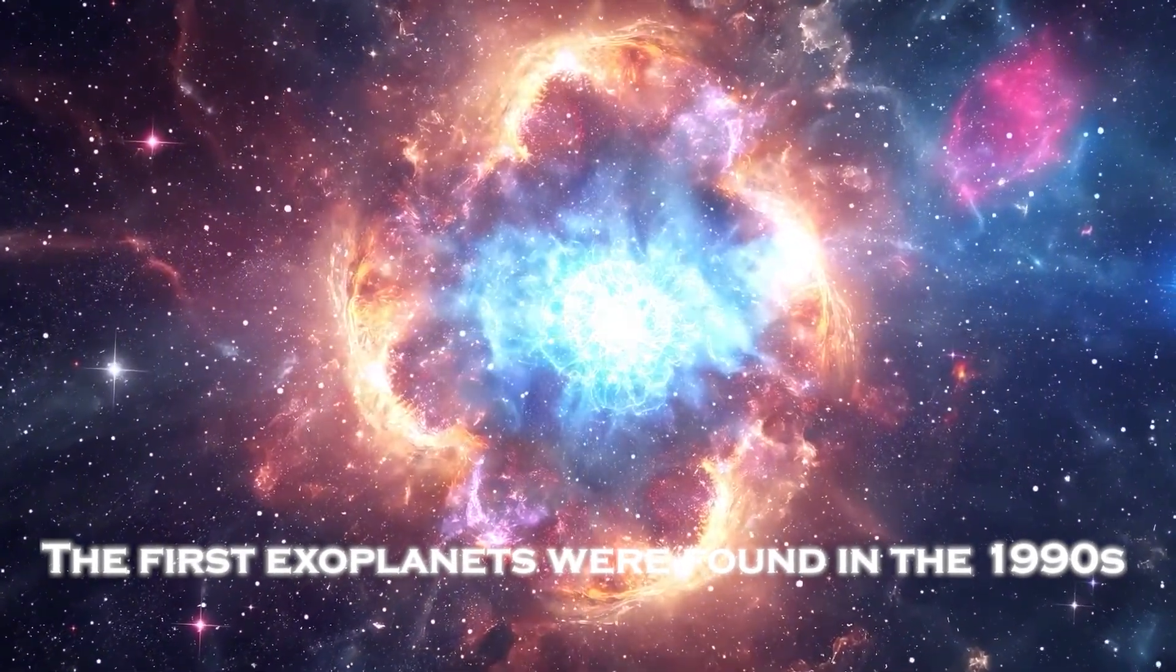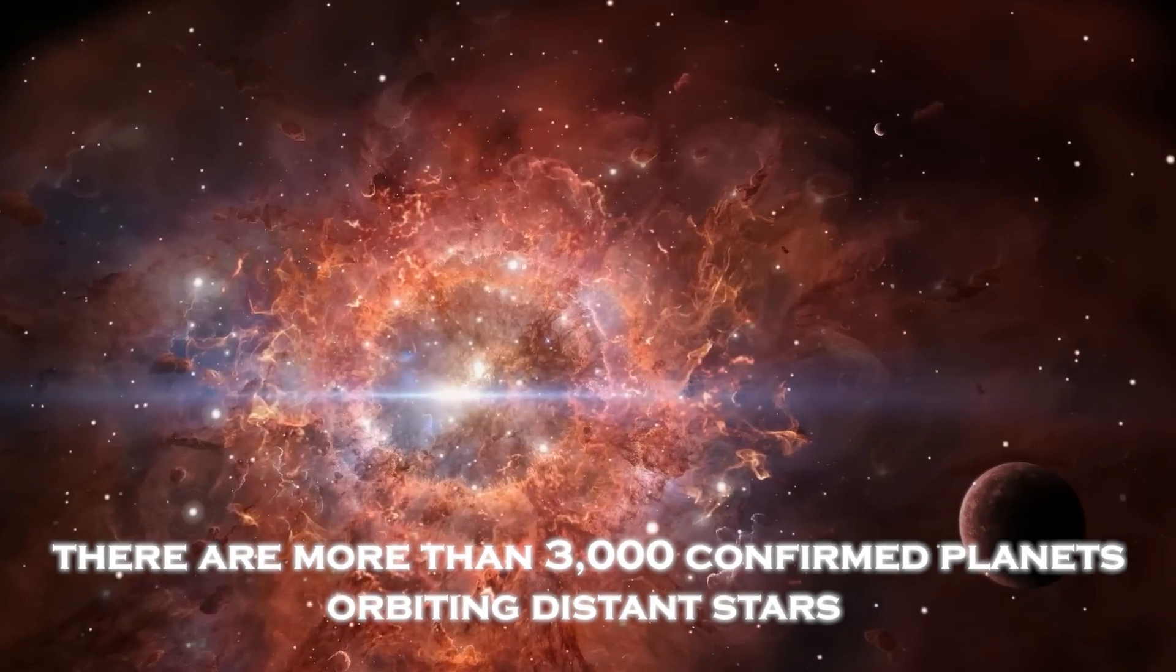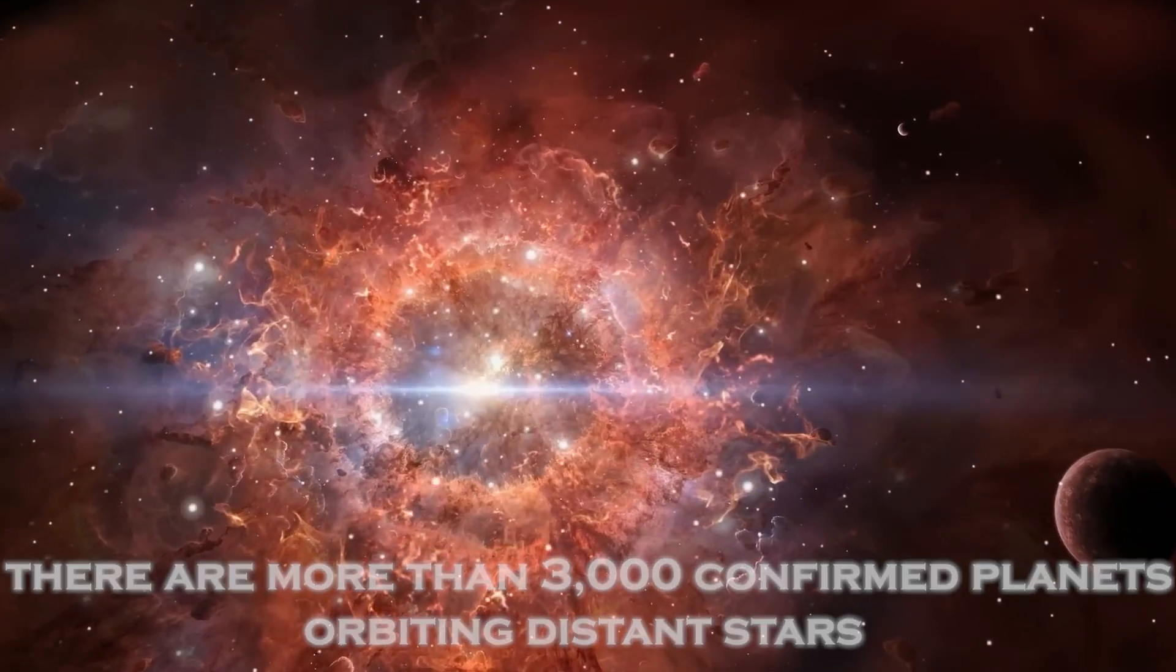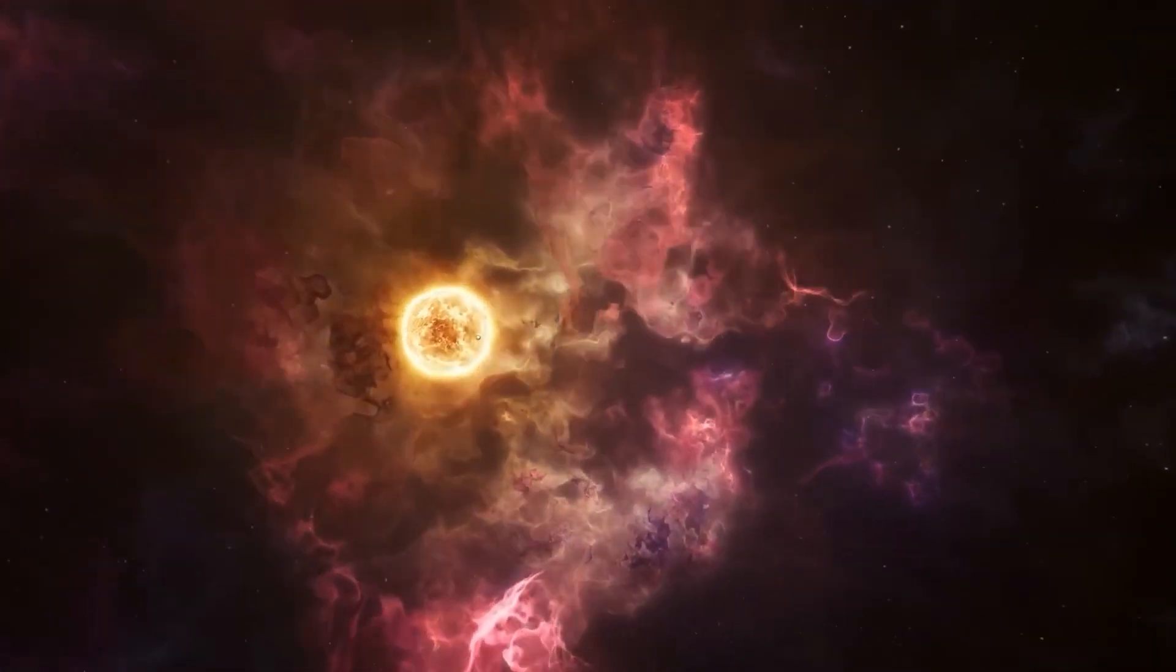The first exoplanets were found in the 1990s, and today there are more than 3,000 confirmed planets orbiting distant stars. However, only a dozen of them have been directly imaged.